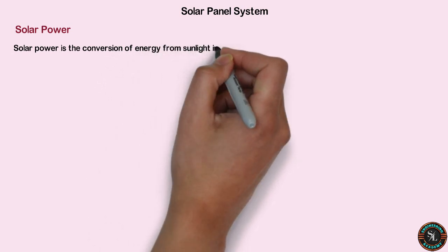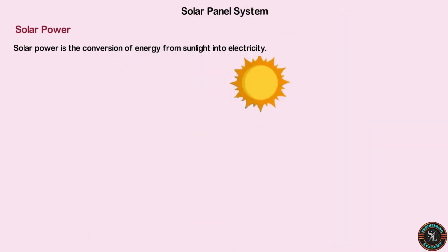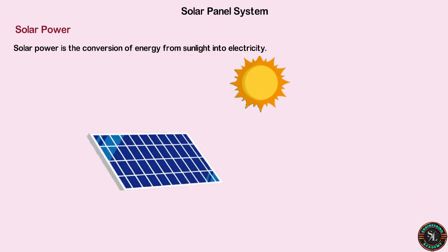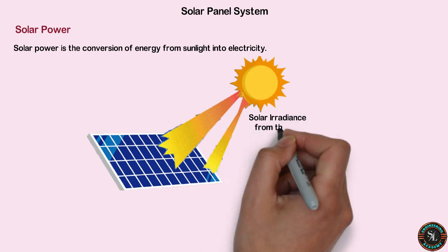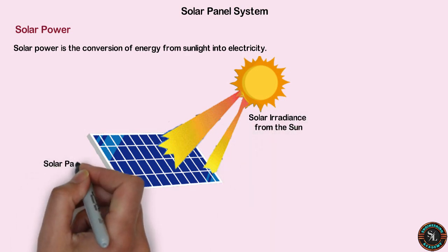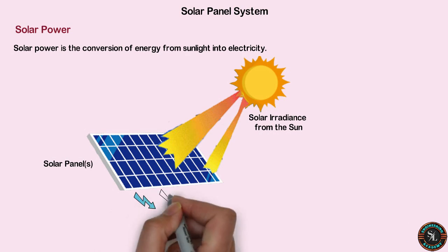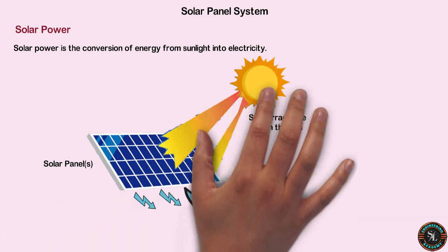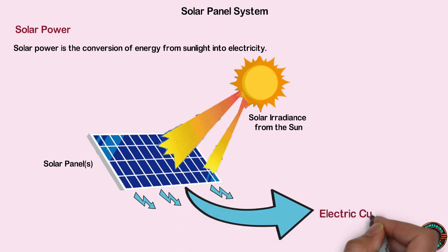Solar power is the conversion of energy from sunlight into electricity, using solar irradiance from the sun and solar panels. Solar energy from sunlight converts into electric current by using solar panels, and nowadays many people use solar panel systems.